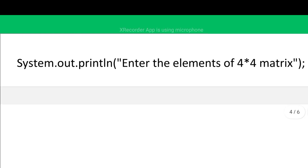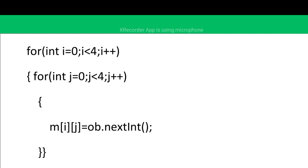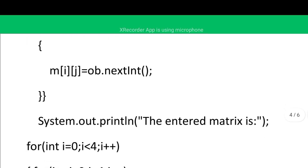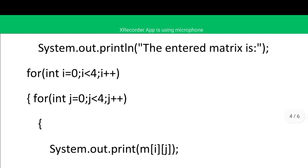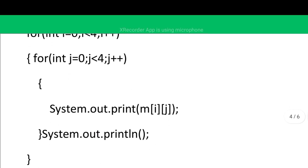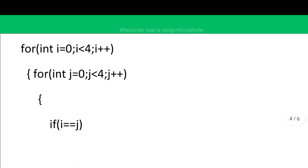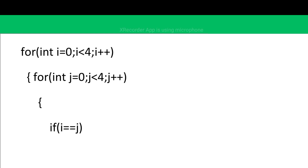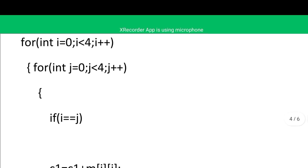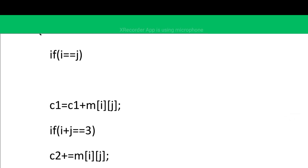We prompt the user to enter elements of the 4x4 matrix, store them using a nested loop — outer loop for rows, inner loop for columns. We then display the entered matrix using the same nested loop structure. To find the left diagonal sum: if the indices i and j are equal, that element is added to c1.